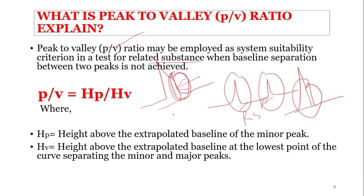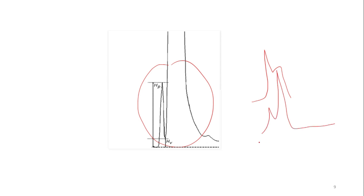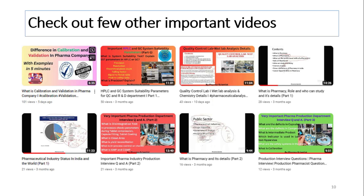In the peak-to-valley ratio, Hp is the height above the extrapolated baseline of the minor peak, and Hv is the height above the extrapolated baseline at the lowest point of the curve separating the minor and the major peak. So p/v = Hp / Hv. This ratio describes how much the minor peak is separated from the major peak in cases where full baseline separation is not achieved.